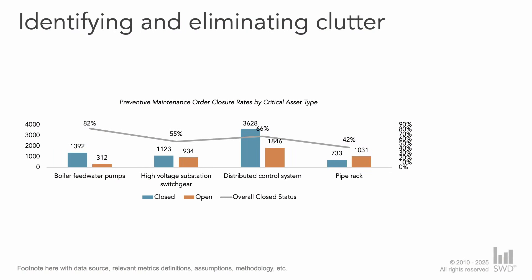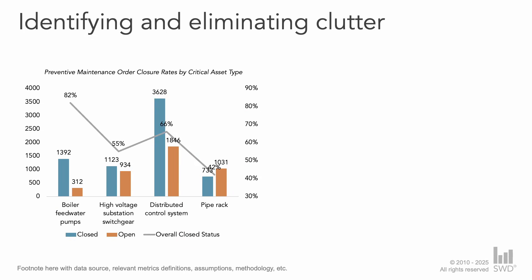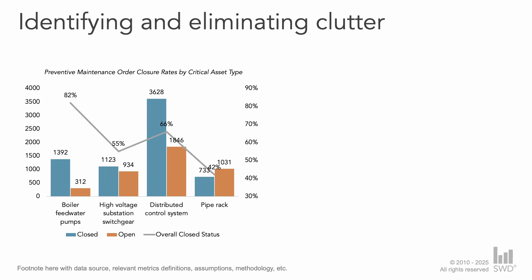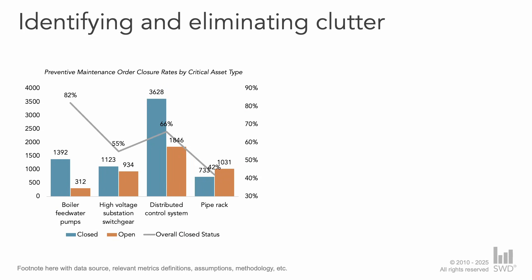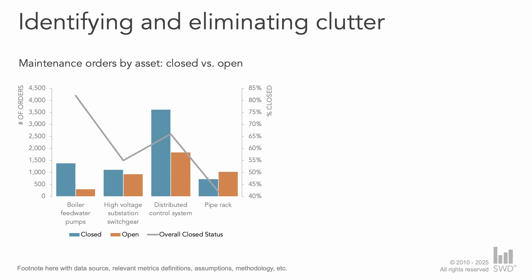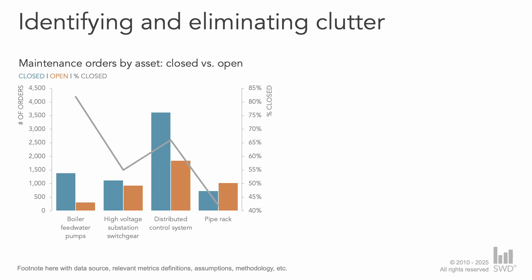We can begin to improve the visual with some common decluttering techniques: adjusting the graph proportions, decreasing the white space between the bars, tidying up the formatting of the axes, removing the data labels, resizing and aligning the chart title, and finally moving the legend to the top as a subtitle.